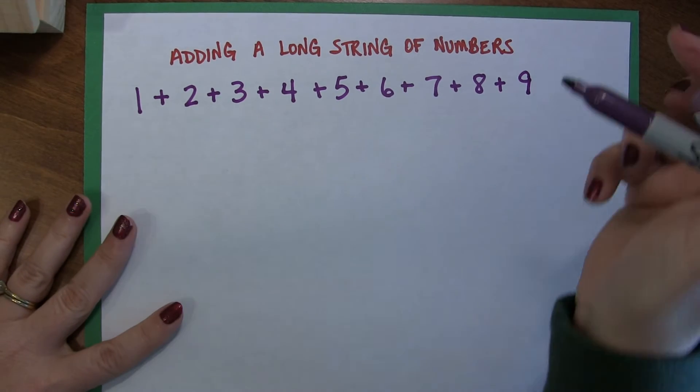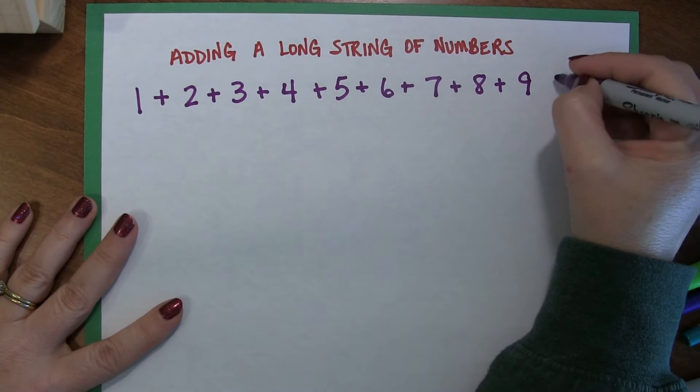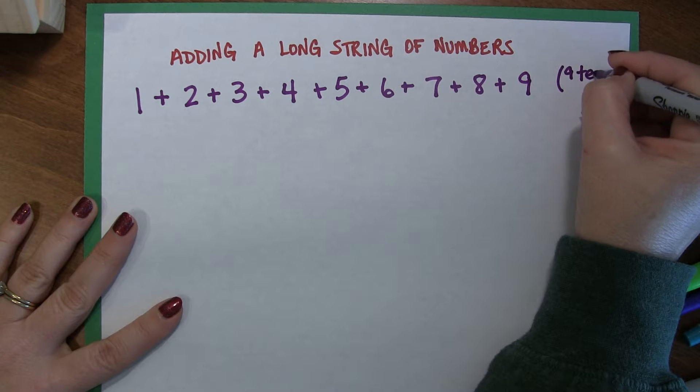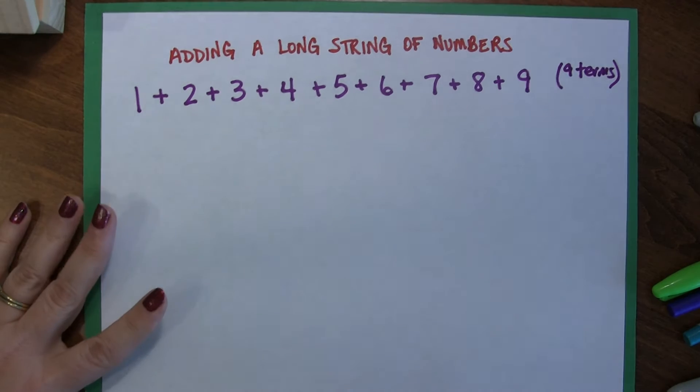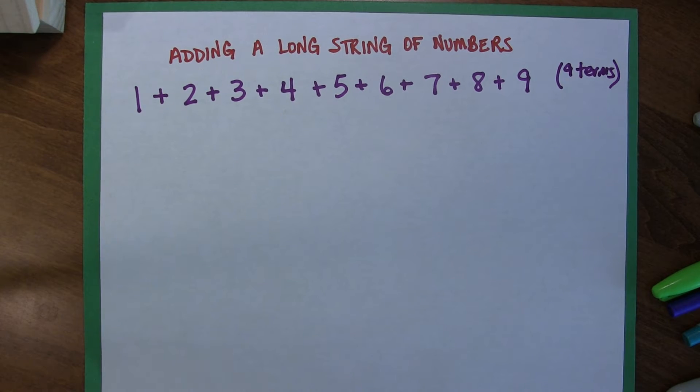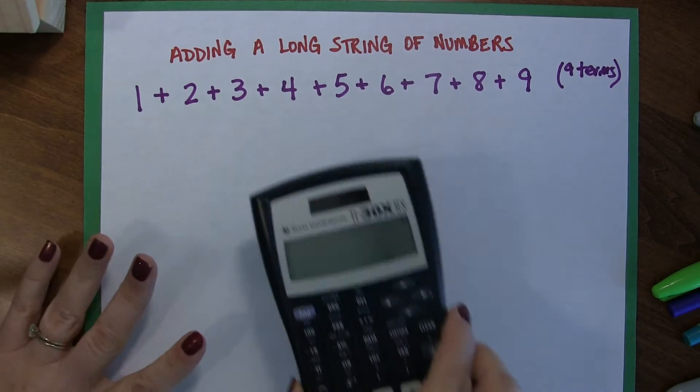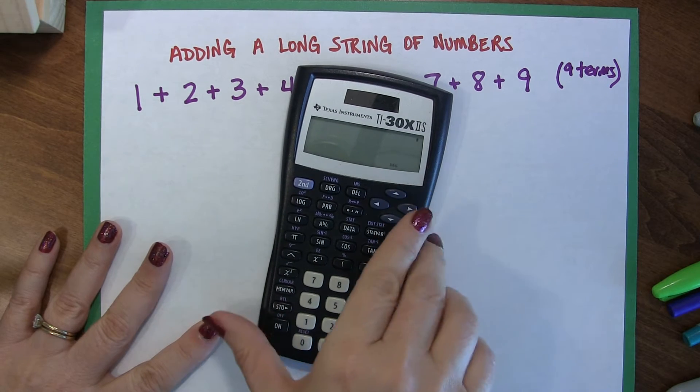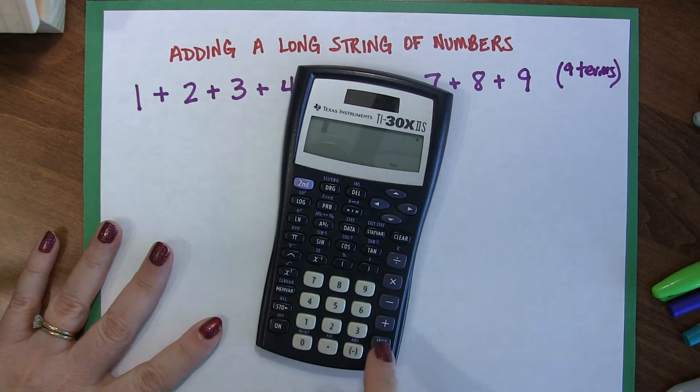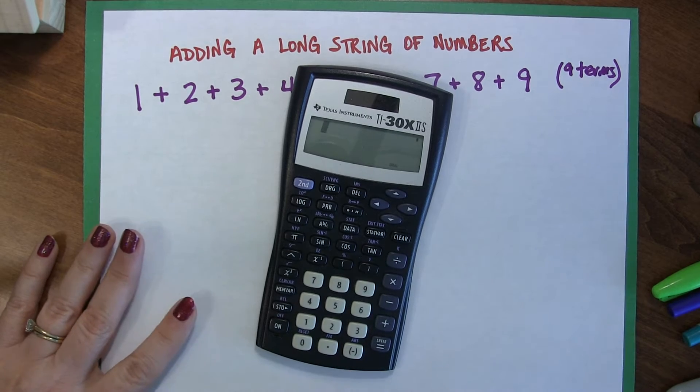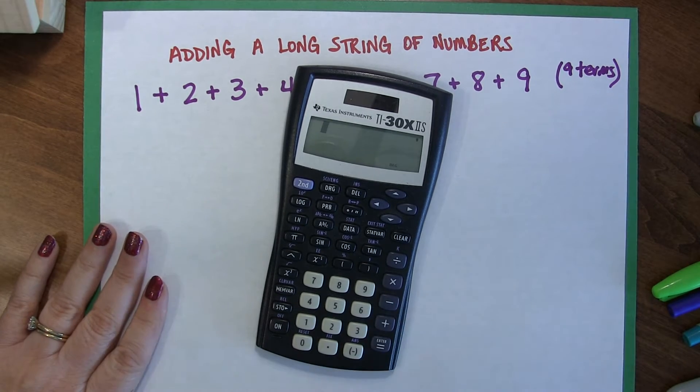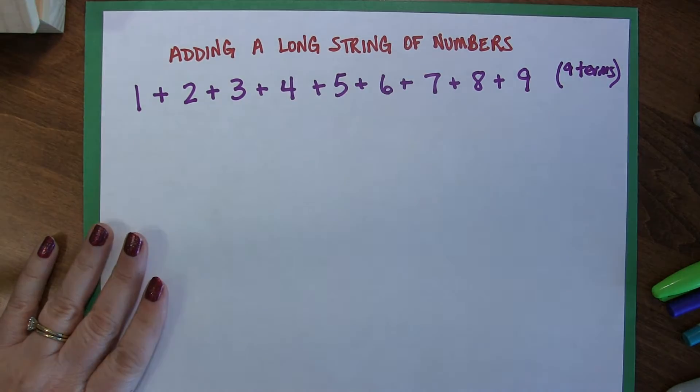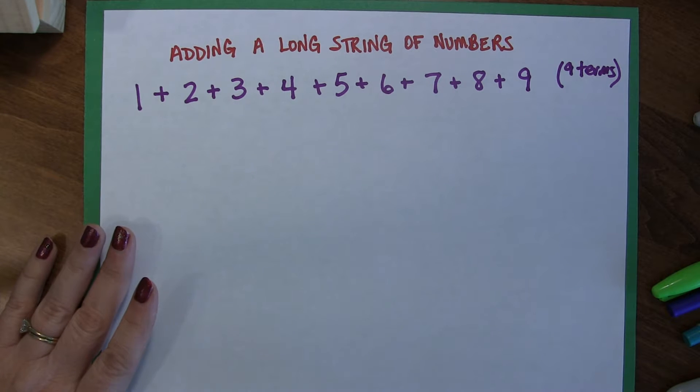This is what I want to calculate. 1 plus 2 plus 3 plus 4 plus 5 plus 6 plus 7 plus 8 plus 9. There are 9 terms here, and I want to add them all together. Now you might be thinking to yourself, oh, I can do that. And before I even finished my little line of numbers here, you had already punched them into your calculator, hit equals, and you know what the answer is. And that is great, good for you, I appreciate your enthusiasm.